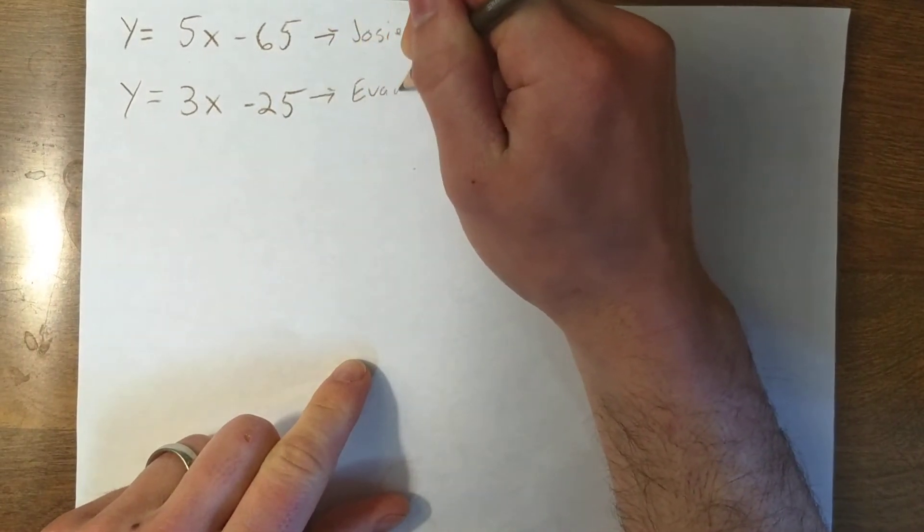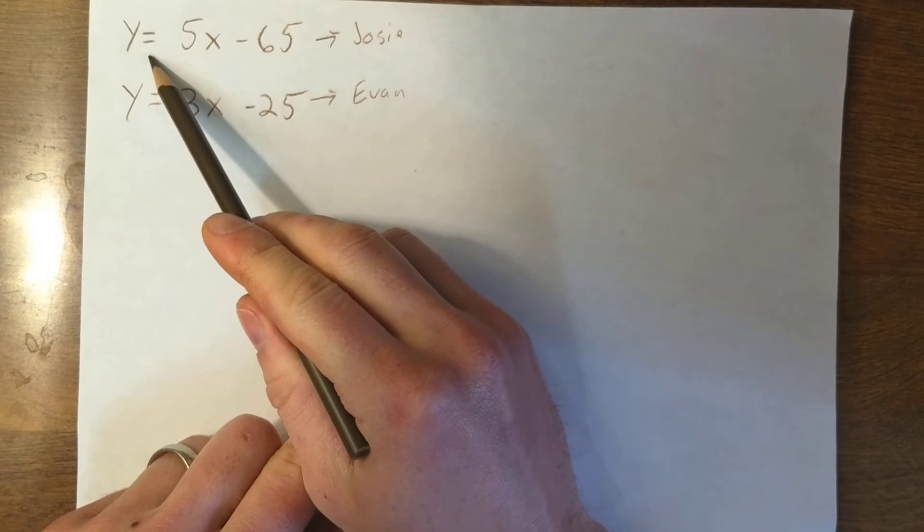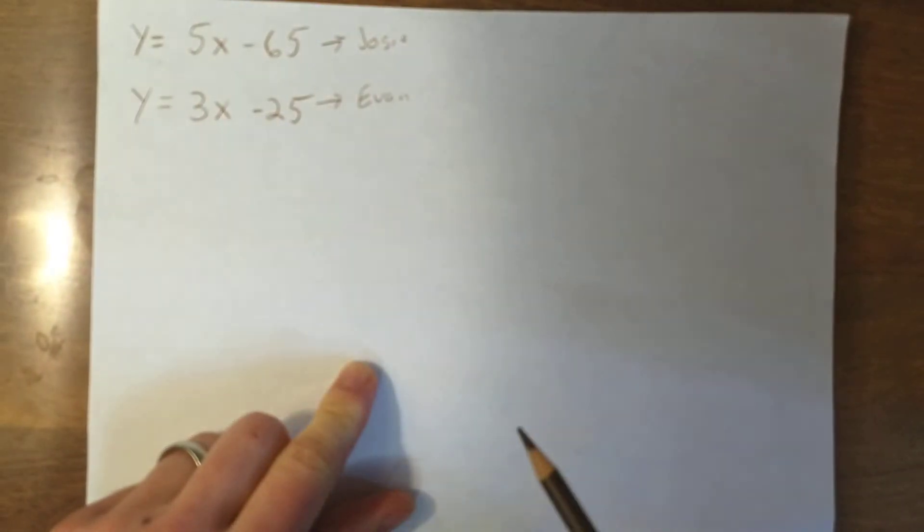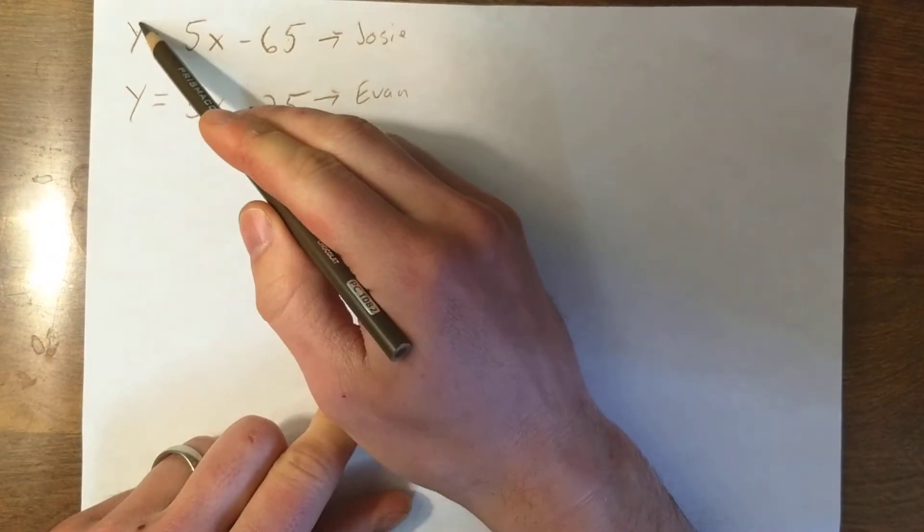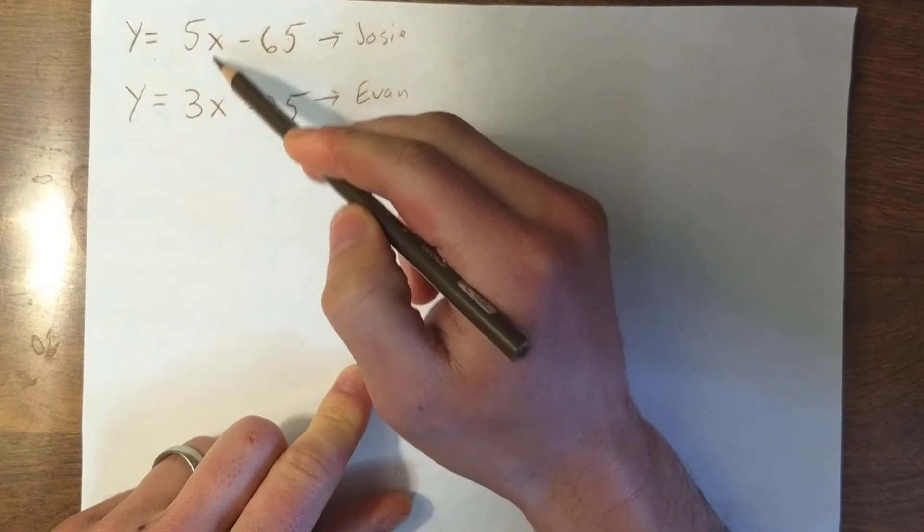Well, when you're solving by substitution, you're trying to find where these two equations equal each other. And we remember from the graph, it's where they're going to intersect. At that point of intersection, I know that these y's have to be the same and these x's have to be the same.